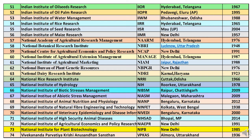Next is NCAP — National Centre for Agricultural Economics and Policy Research — headquartered at New Delhi, started in 1991. Next is MANAGE — National Institute of Agricultural Extension Management — headquartered at Hyderabad, Telangana, started in 1987. Next is NIAM — National Institute of Agricultural Marketing — headquartered at Jaipur, Rajasthan, established in 1988. Next is NBPGR — National Bureau of Plant Genetic Resources — headquartered at New Delhi, started in 1976.